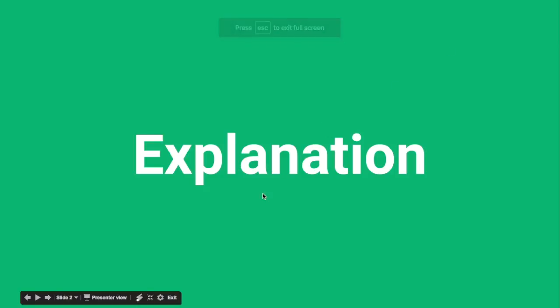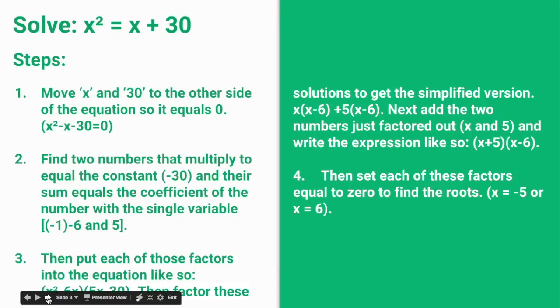Welcome to our Algebra 2 presentation, Over Factory. A problem to solve for an example is x squared equals x plus 30.